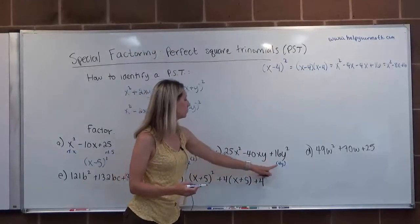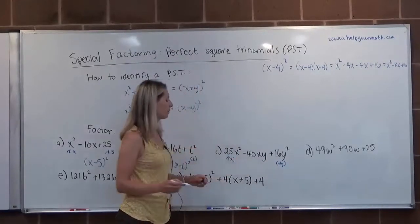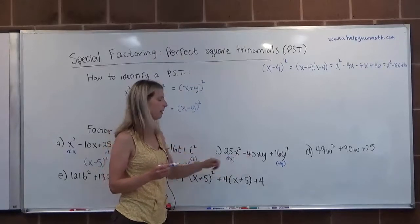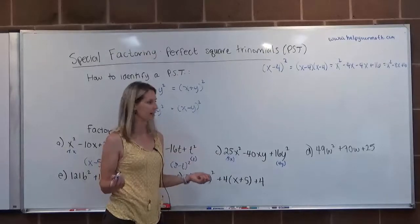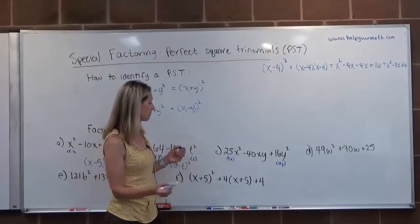If we multiply the two roots, 5X times 4Y would be 20XY, and double it, we end up with that middle term of 40XY. There's a subtraction, which indicates that our binomial will have subtraction.